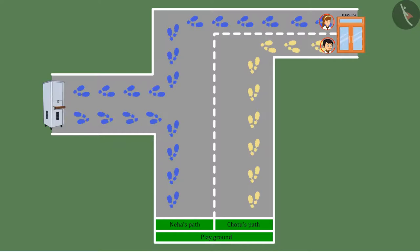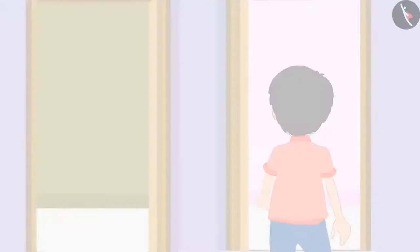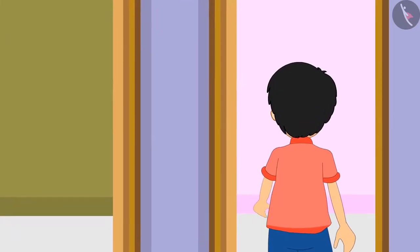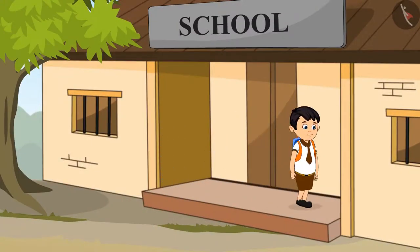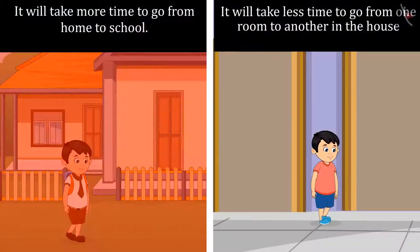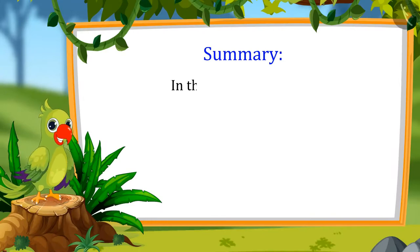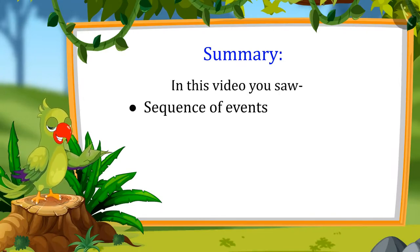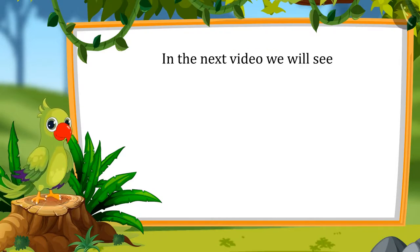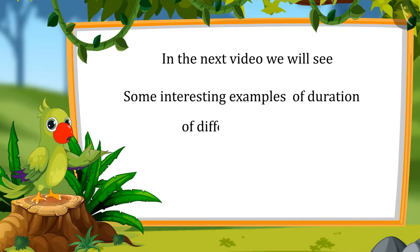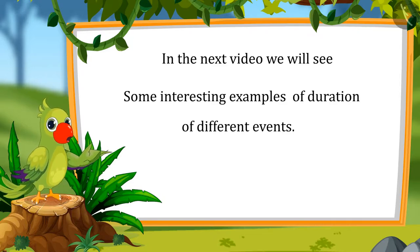Children, what will take longer — going from one room to another in your house, or walking from your home to your school? You guessed it right, children. You will take more time from your home to school because you will have to walk more to get there. So kids, that's all for today. In this video, you learned the order of activities and learned to compare the time taken in different activities. In the next video, we will see some interesting examples of comparing time taken in different activities. Till then, bye-bye children.